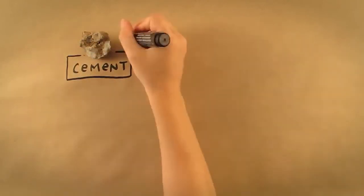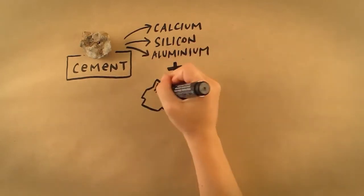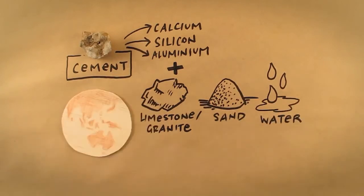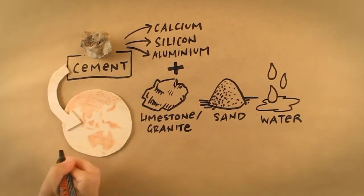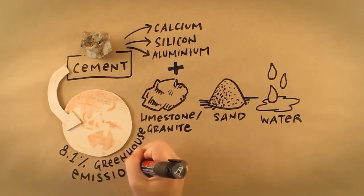Cement, commonly used in construction, is another material that requires a lot of energy to produce. It is a compound comprised of oxides of calcium, silicon and aluminum, and is used to make concrete by mixing with crushed limestone or granite rock, sand and water. CSIRO have estimated that cement is responsible for 8.1% of global greenhouse gas emissions produced from fossil fuels.